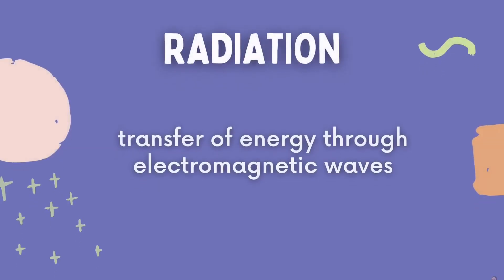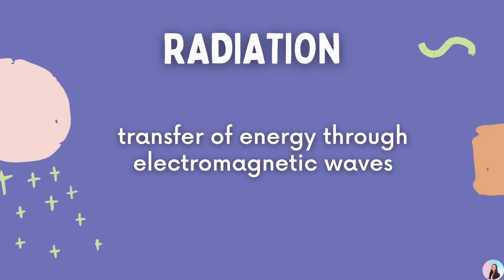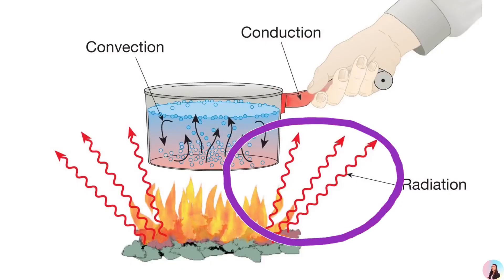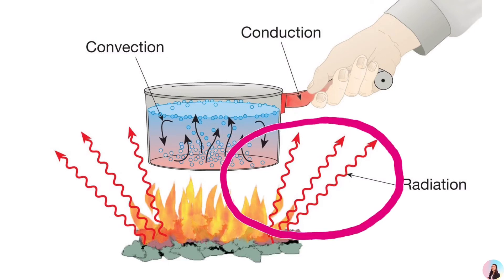The third mode of heat transfer is radiation. This is the transfer of energy through electromagnetic waves. The heat from the flame reaches your hand, even though there is no direct contact. The heat travels through waves.